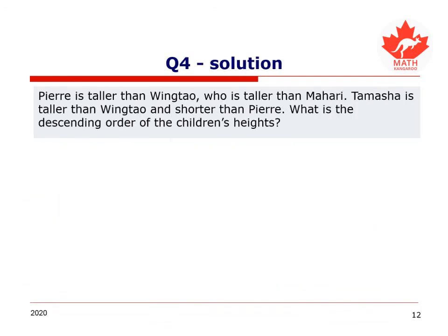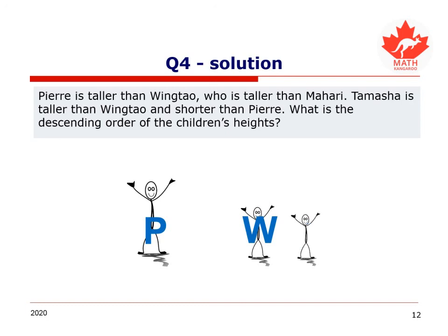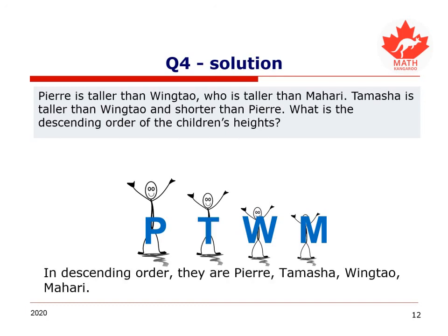I drew a picture. Pierre was taller than Wing Tau — there's Pierre, and there's Wing Tau, and then there's Mahari, the tiniest. Then we are told Tamasha is taller than Wing Tau but shorter than Pierre, so I know exactly where to put her — right there, shorter than Pierre but taller than Wing Tau. So what is the descending order from tallest to shortest? It is Pierre, Tamasha, Wing Tau, and Mahari. That is my final answer and it is correct.